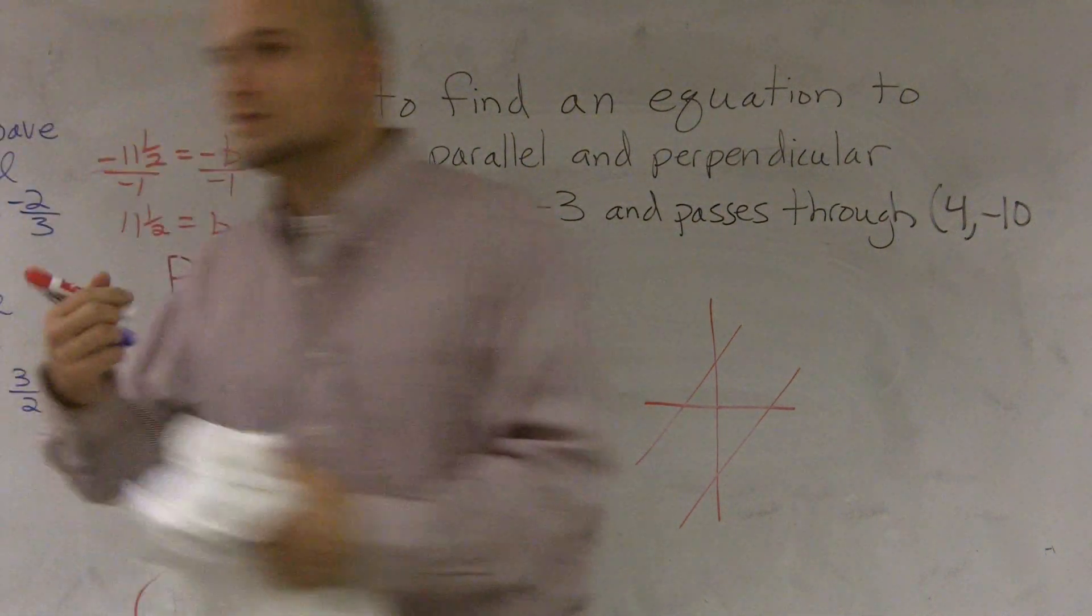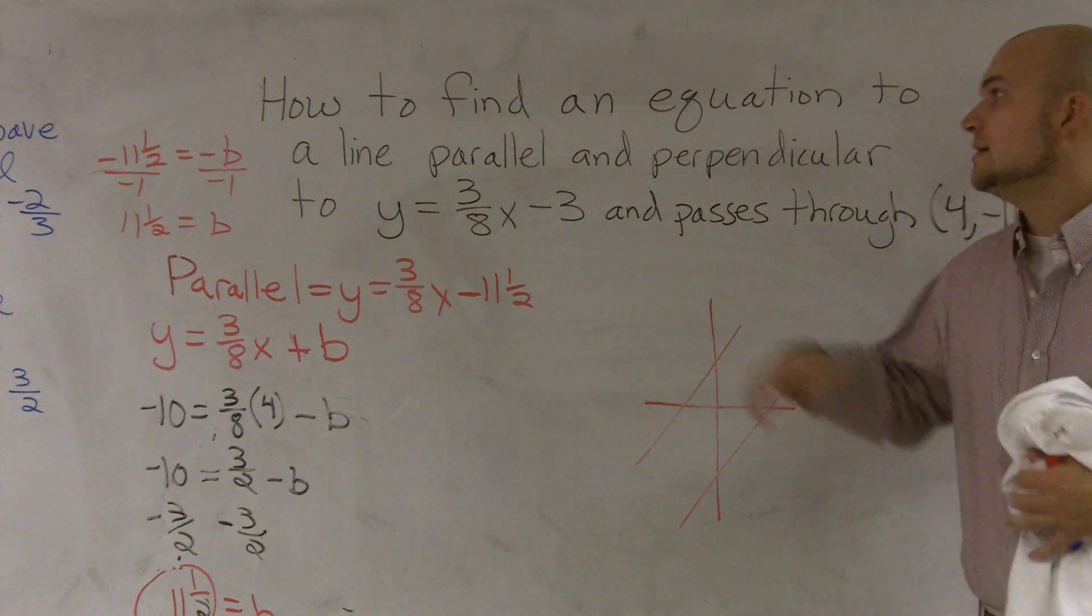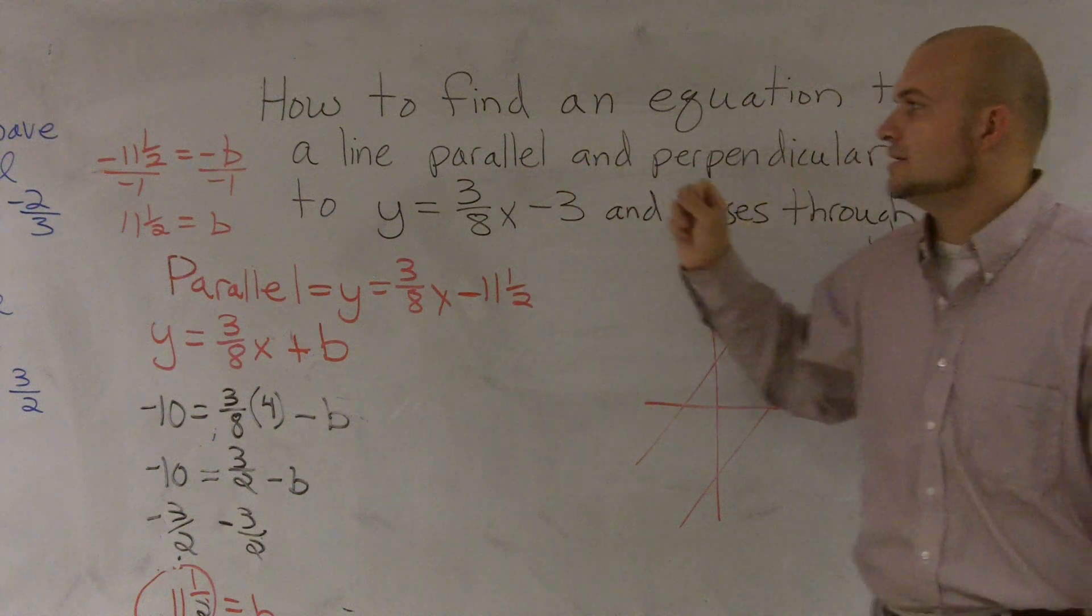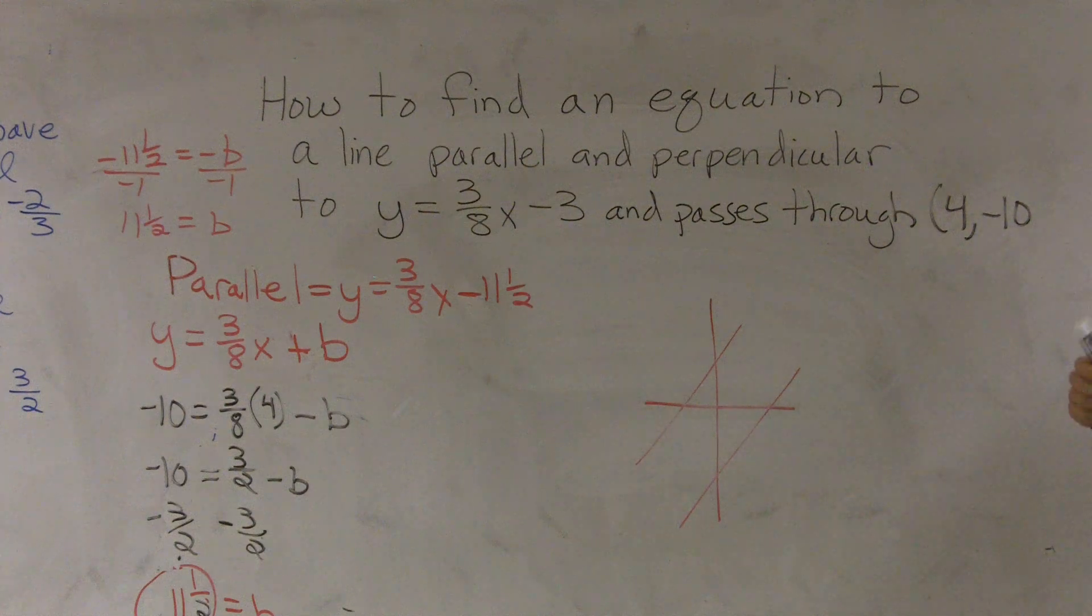Alright, let me go and see if I can maybe do this at a little bit slower pace and help you guys understand a little bit better. When I want to find an equation of a line parallel and perpendicular to a line y equals 3/8x minus 3 and passes through the point (4, -10).